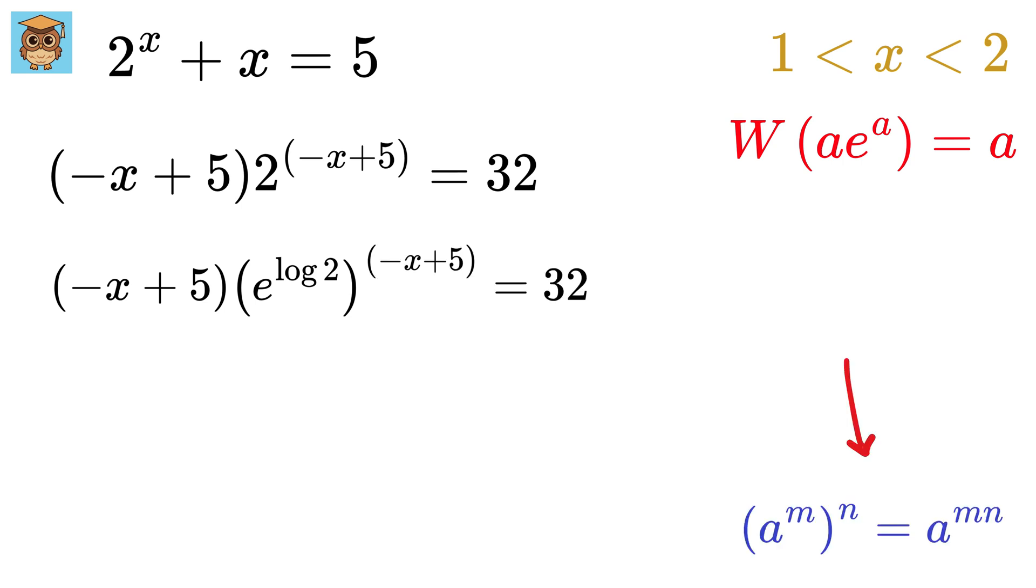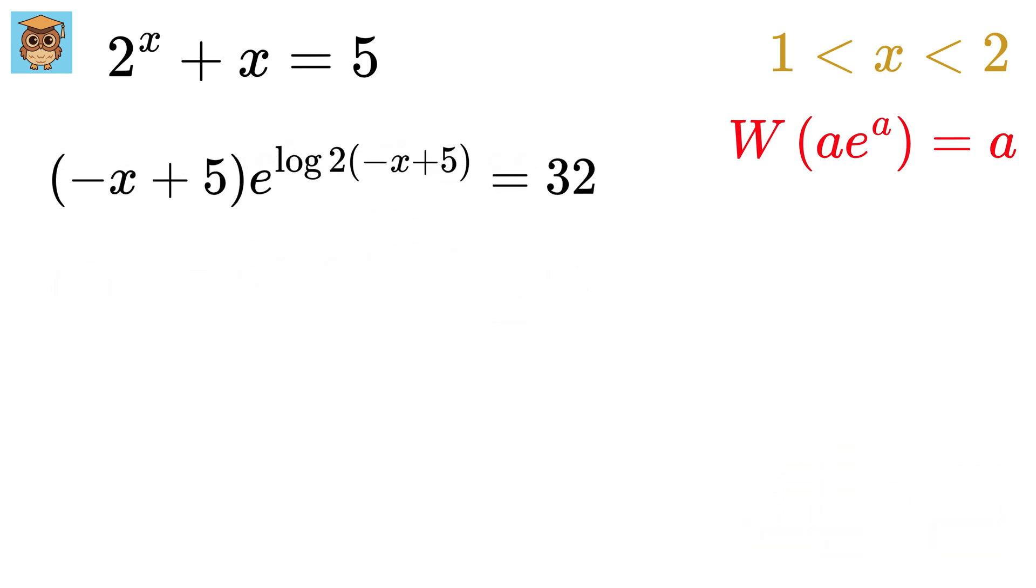Again, using this power rule, this becomes minus x plus 5 times e raised to log 2 times minus x plus 5 equals 32. Now multiply both sides by log 2 to get log 2 times minus x plus 5 times e raised to log 2 times minus x plus 5 equals 32 log 2.